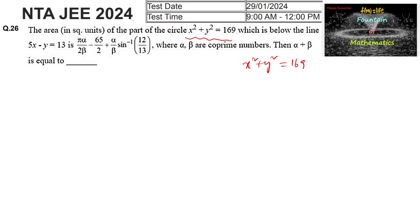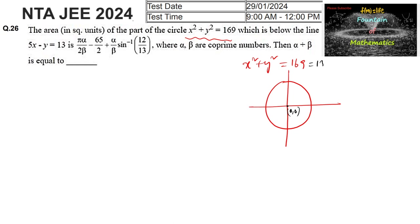We can see that the circle is in standard form whose center is the origin (0, 0) and the radius is 13. It is in the form x² + y² = r².